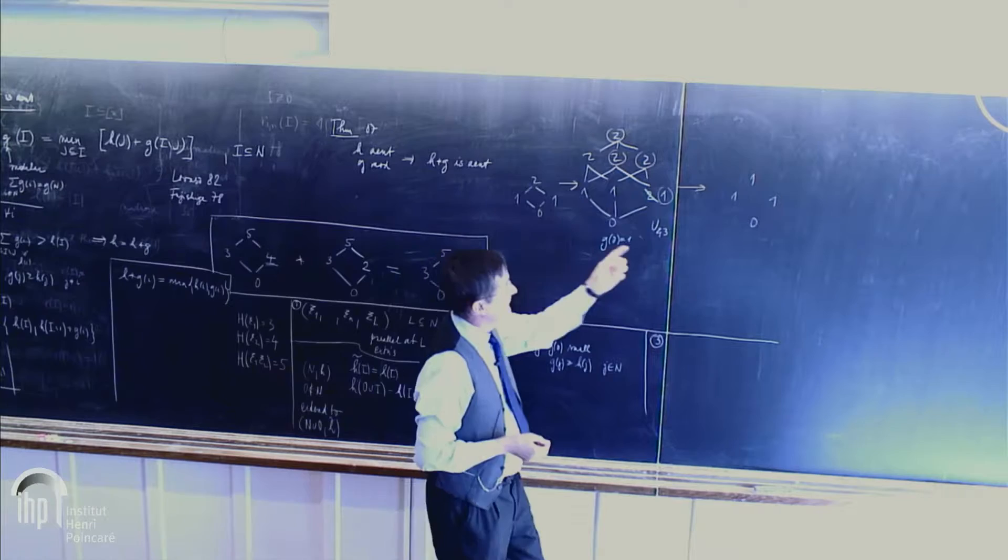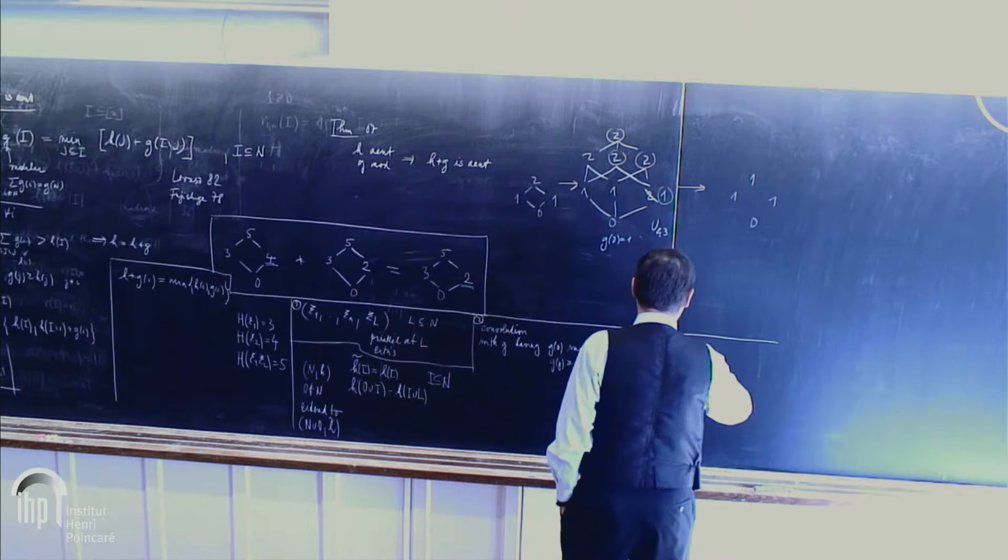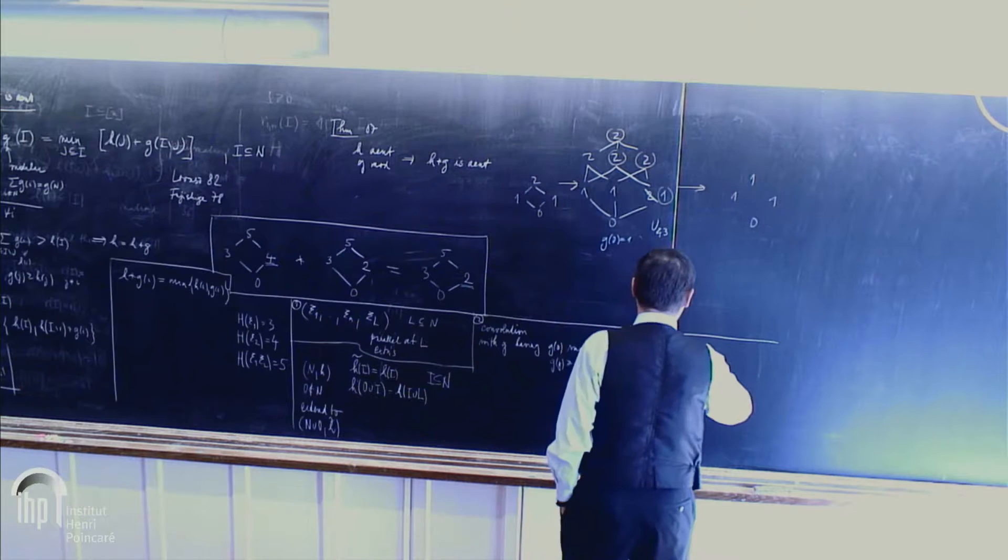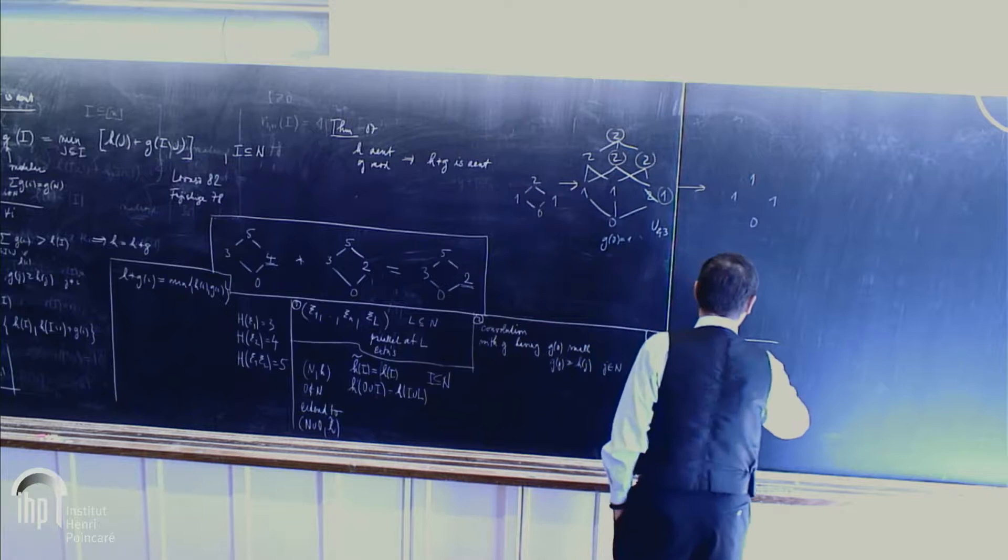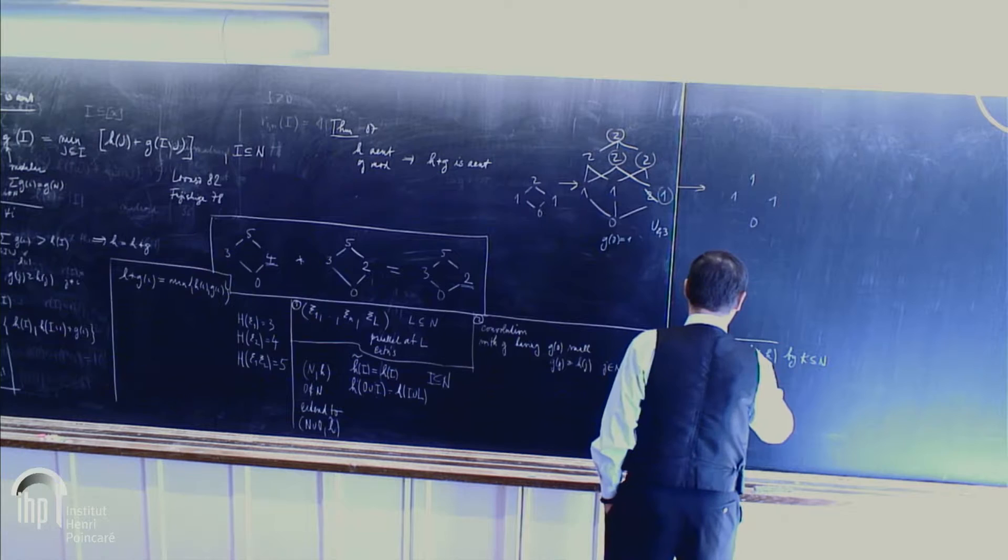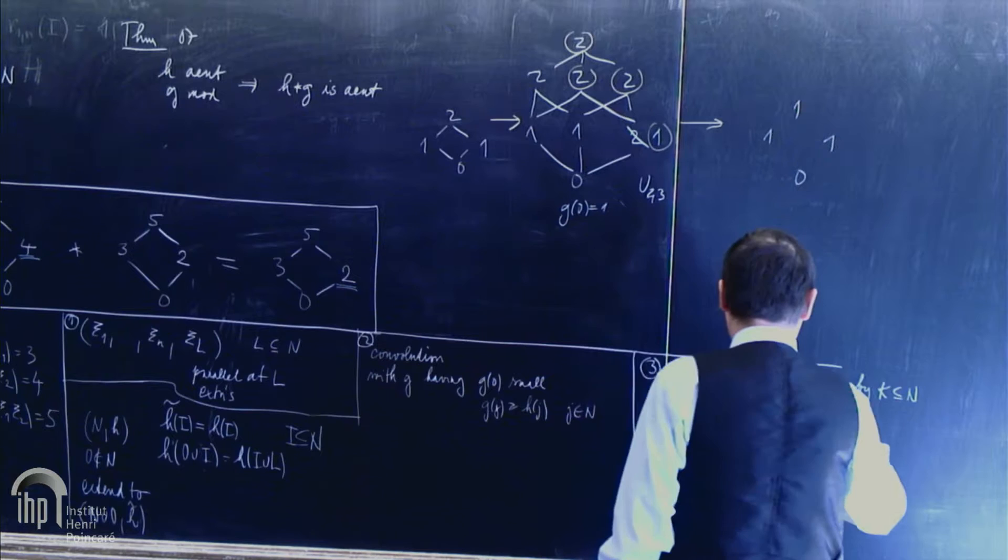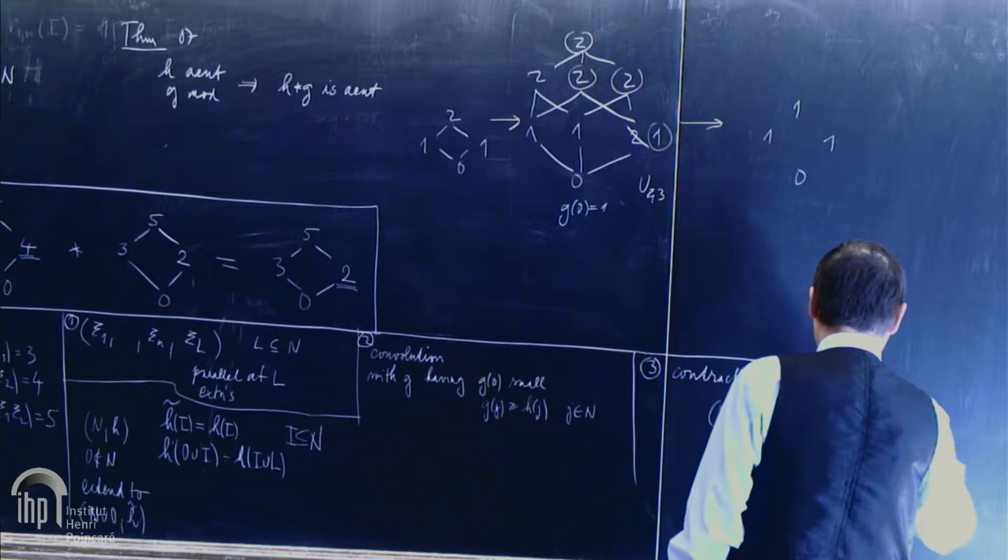So from original point, I got extreme point, which is not quite straightforward. So that shows that combining, so contraction, I should say more exactly. Contraction of nH by, let's say, k is polymatroid on n minus k, maybe g. And it's defined g, i is h, i union k, minus h k. For i subset n minus k.